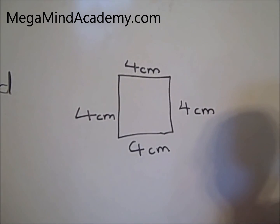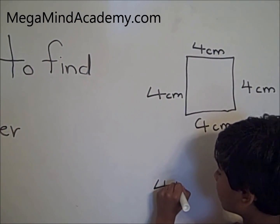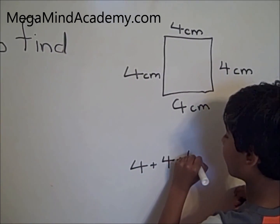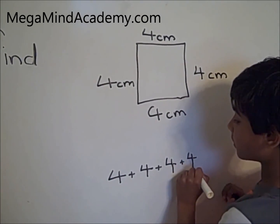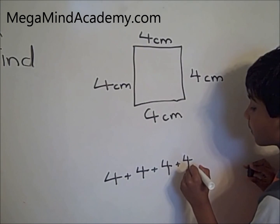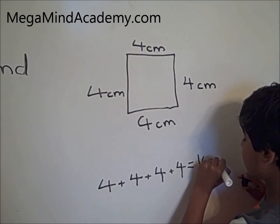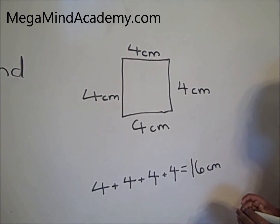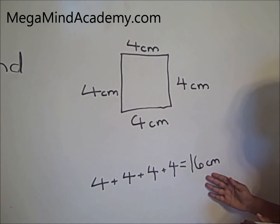Let's write that down. 4 plus 4 plus 4 plus 4. 4 plus 4 is 8, plus 4 is 12, plus 4 is 16 cm. The parameter of this square is 16 cm.